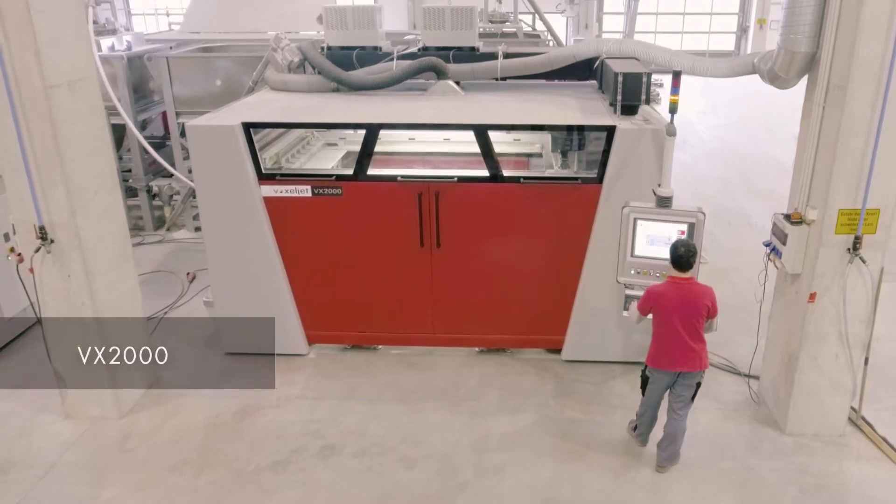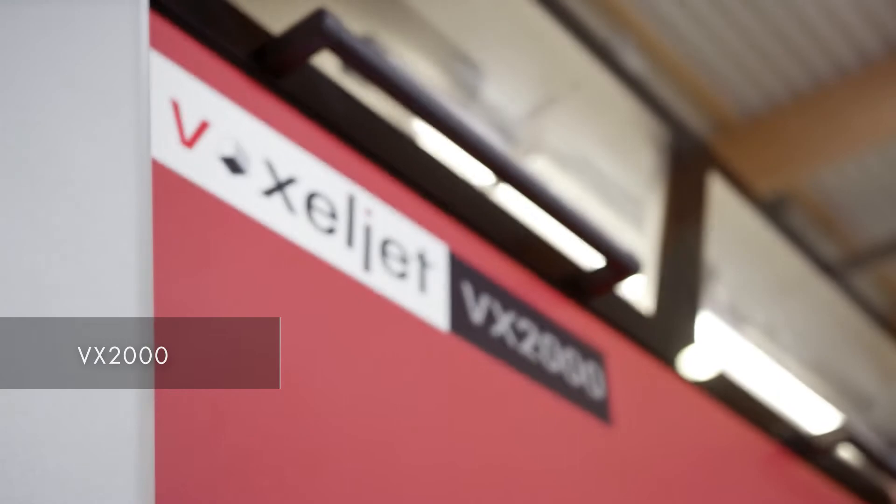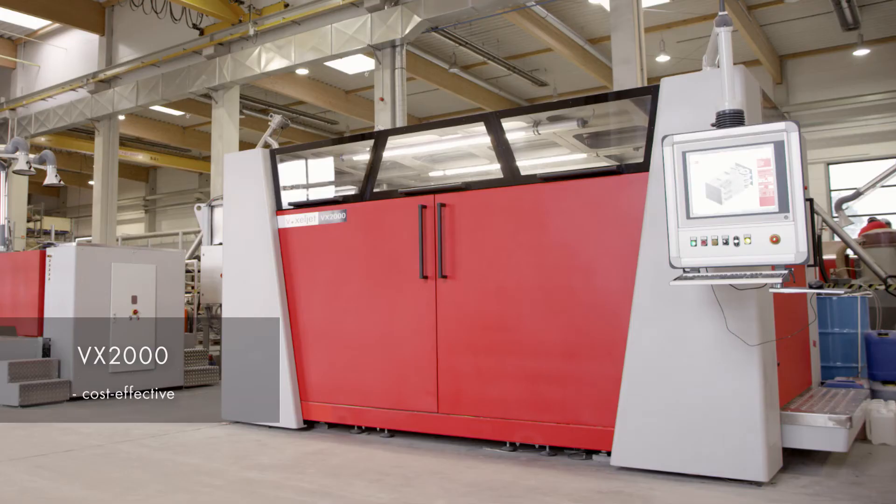VoxelJet presents the VX2000, the industrial 3D printing system for the cost-effective manufacture of sand molds and cores for metal casting.